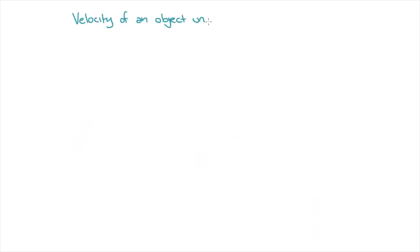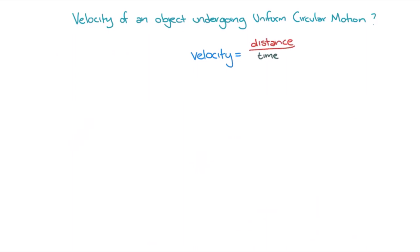Now we're going to come up with an expression for the velocity of objects undergoing uniform circular motion. What speed is an object undergoing uniform circular motion actually travelling at? We know that for a constant velocity, the speed v is equal to the distance travelled divided by the time taken. So let's investigate one revolution, which is an object travelling once around the circle.